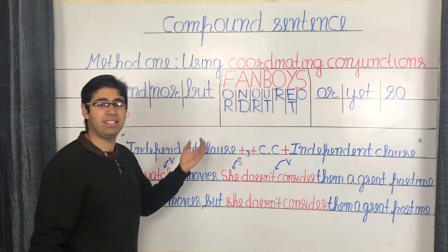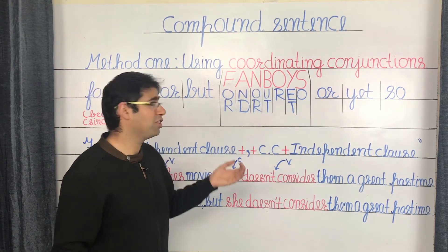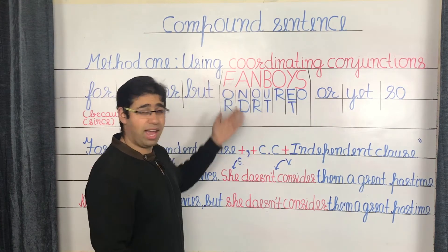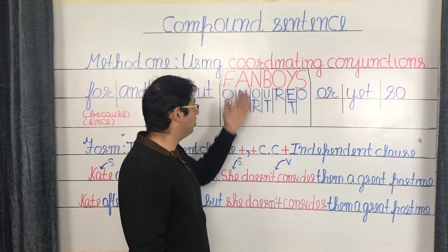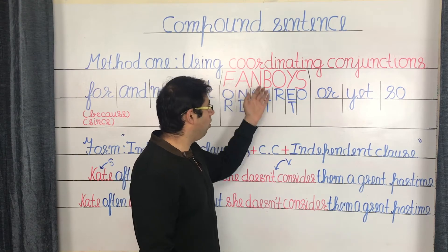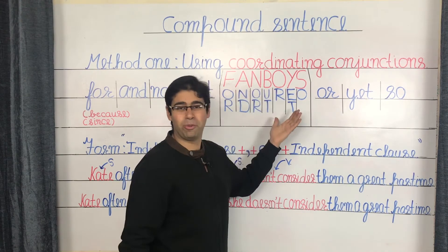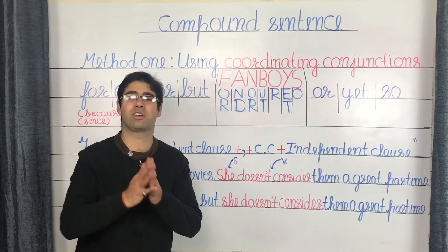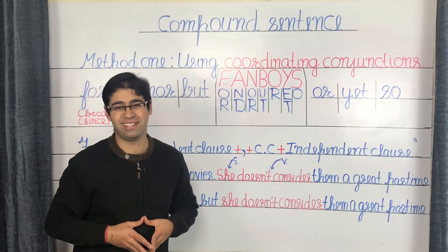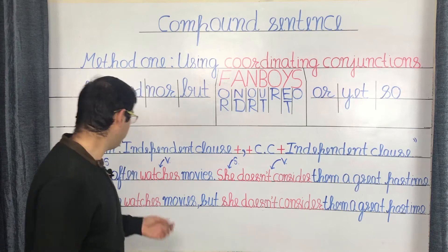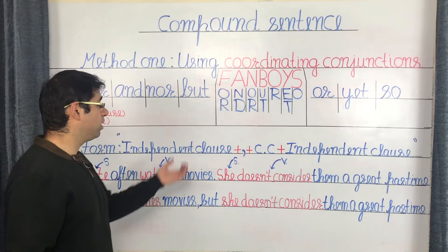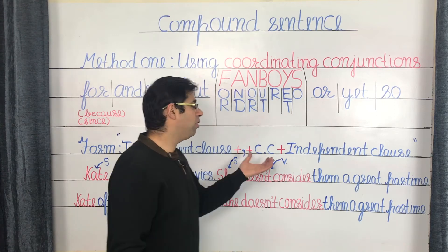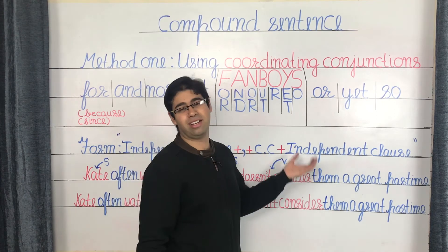You can easily remember these seven coordinating conjunctions using the mnemonic FANBOYS: for, and, nor, but, or, yet, and so. The structure of the compound sentence using coordinating conjunctions is: independent clause, followed by a comma, followed by the coordinating conjunction, followed by another independent clause.